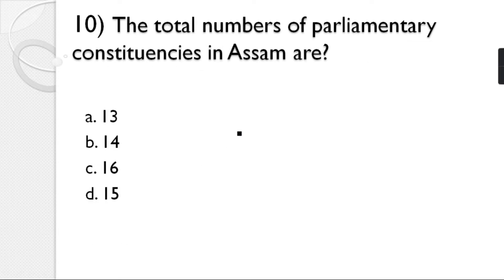Question number 10: What is the total number of parliamentary constituencies in Assam? Options: 13, 14, 16, 15. The correct answer is option B — 14.